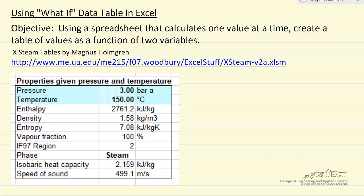Here we're going to look at using a what-if data table in Excel. This is where we use a spreadsheet that only calculates one value at a time to create a table that has many of those values. In this spreadsheet, we input the values that are in blue — the pressure and the temperature — and then this calculates values from the STEAM tables. What we're going to look at is this enthalpy calculation.